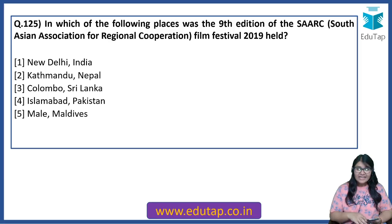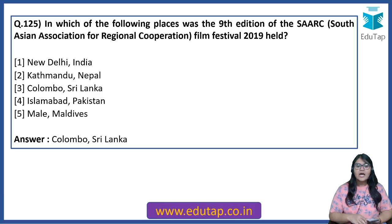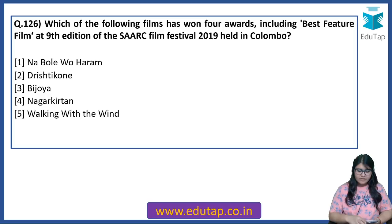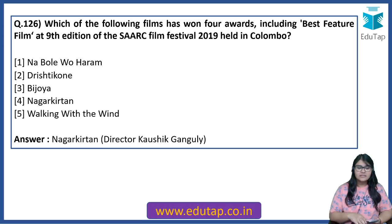In which of the following places was the 9th edition of the SAARC Film Festival 2019 held? The answer is Colombo, Sri Lanka. Which of the following films won 4 awards including Best Feature Film at the 9th edition of the SAARC Film Festival held in Colombo? The answer is Nagarkirtan, directed by Kaushik Ganguly. Keep this information in mind — it is important.